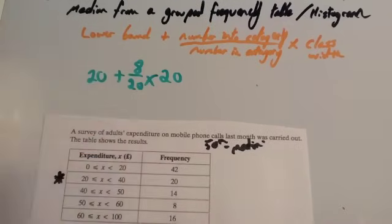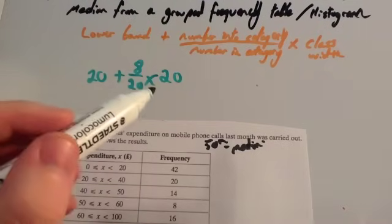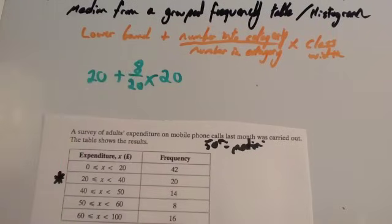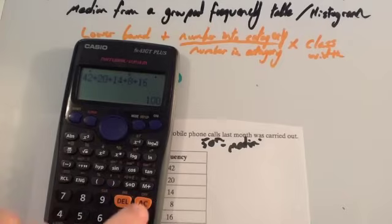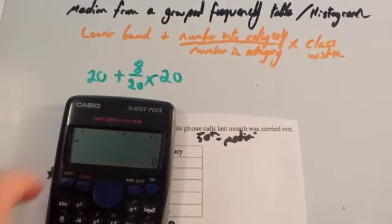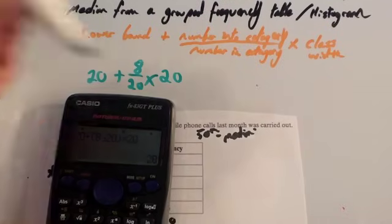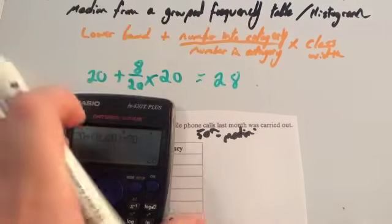And then that will tell us what an estimate of the median is. Actually, you can do this without a calculator because 8 twentieths times 20 would just be 8. And then plus that on the 20 would be 28. I've just got to show you on the calculator. 20 plus 8 twentieths times 20 equals 28. So an estimate of our median is 28.